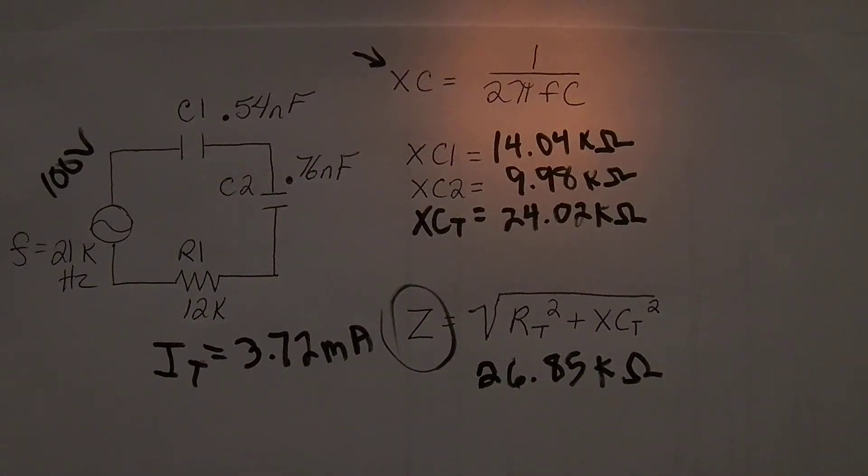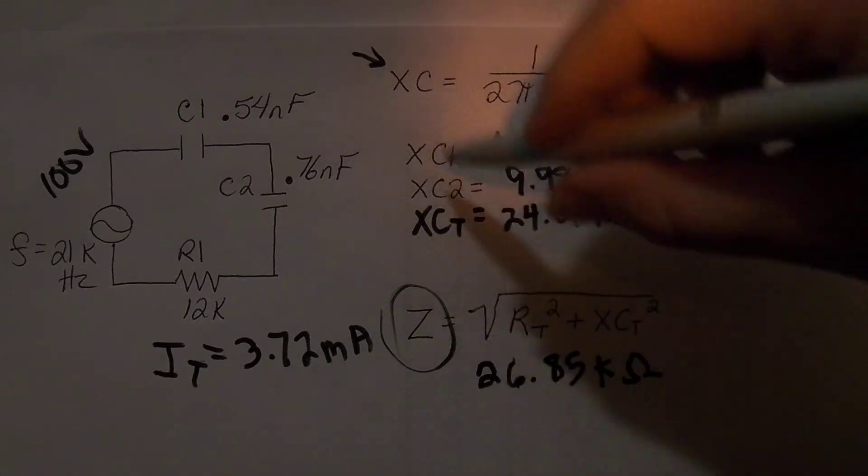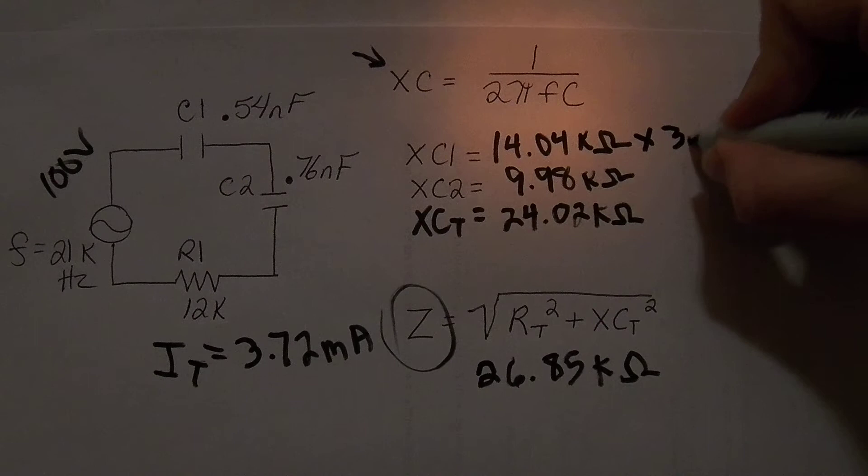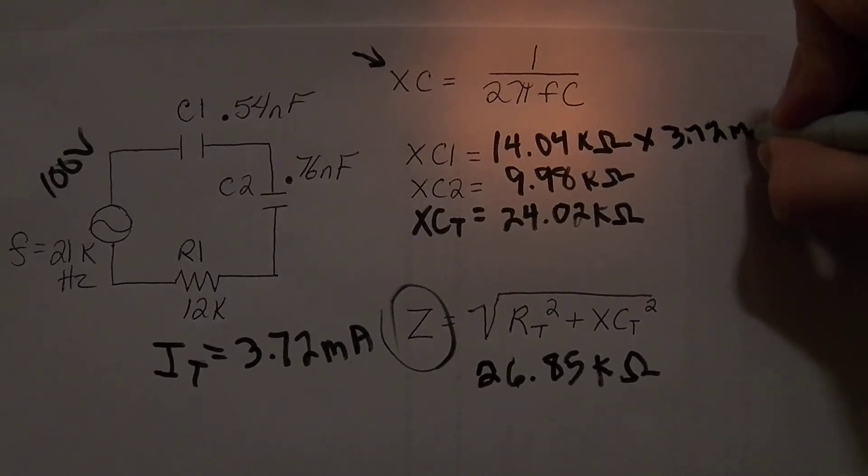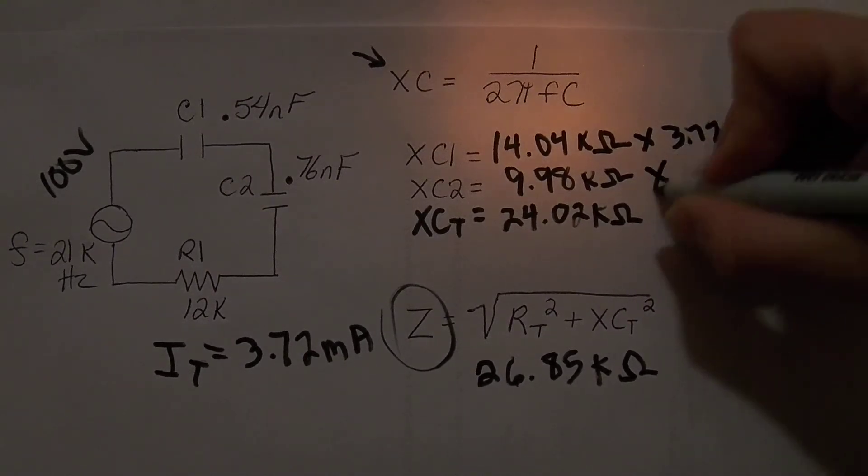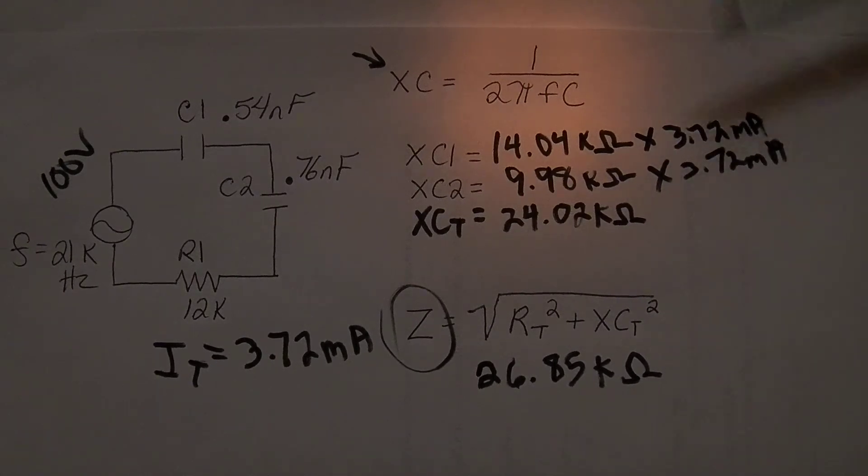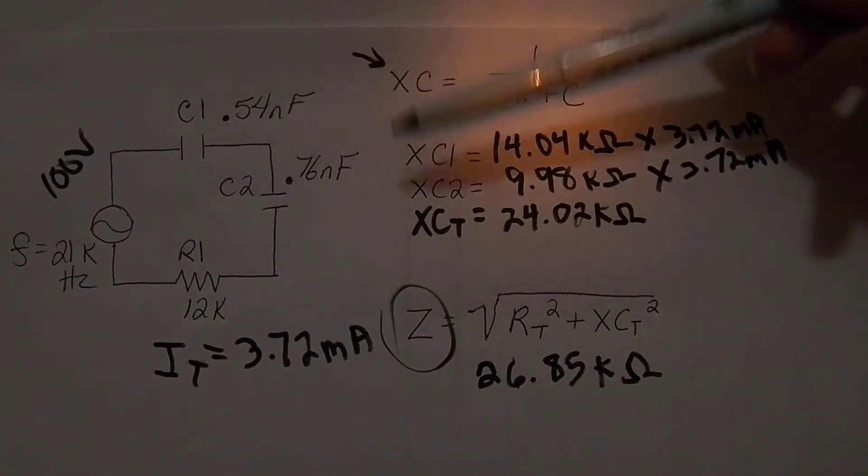So that is our total current. And then we take our total current and we times it, we multiply it by the individual ohmic values to get their voltage drops. So if I wanted to know what the voltage drop of C1 was, I would multiply this by 3.72 milliamps, and this by 3.72 milliamps, and that would give me the voltage drops for both my capacitor C1 and my capacitor C2.